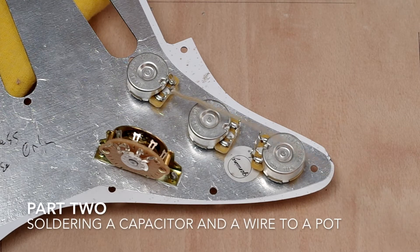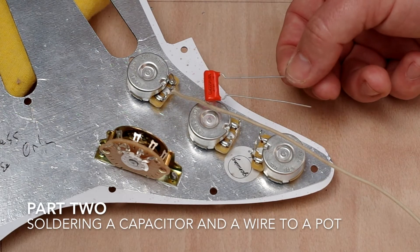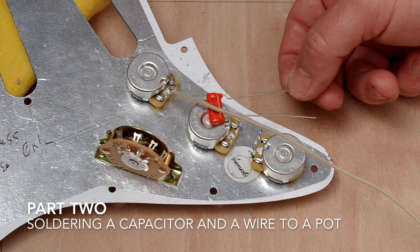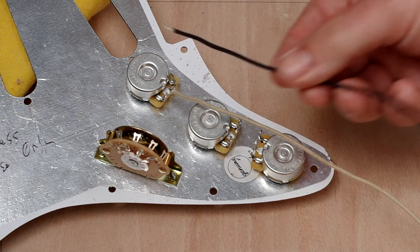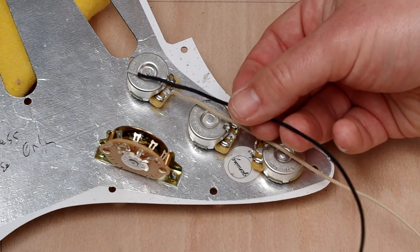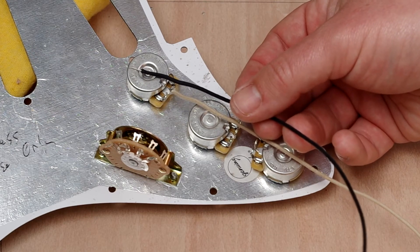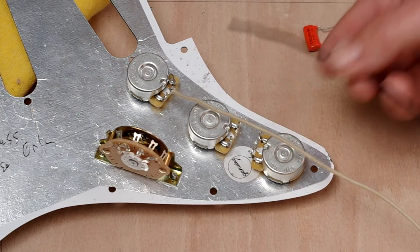So in this video I'm going to show you two things. I'm going to show you how to solder a capacitor to the top of a potentiometer or a pot and I'm also going to show you how to solder a wire, a black wire here, a ground wire to the top of a pot.